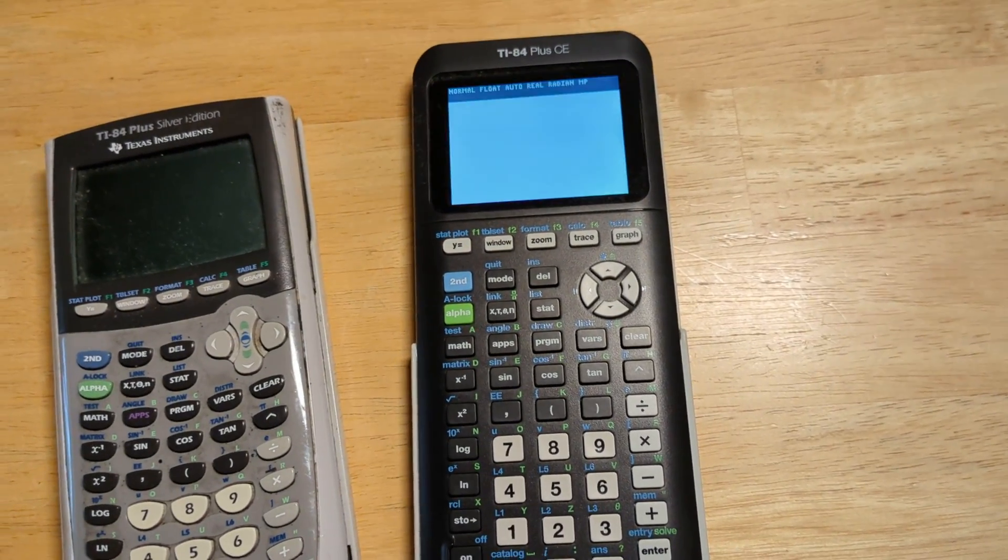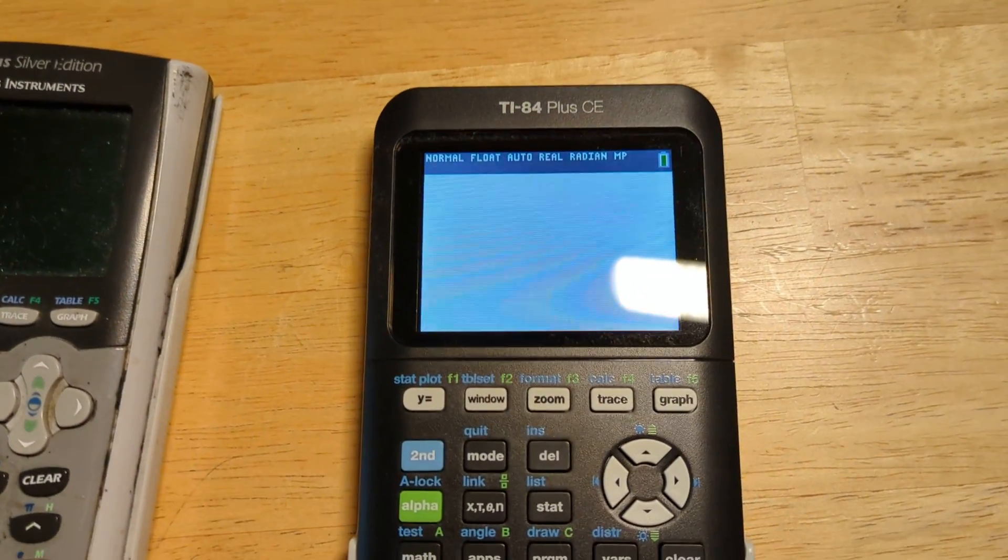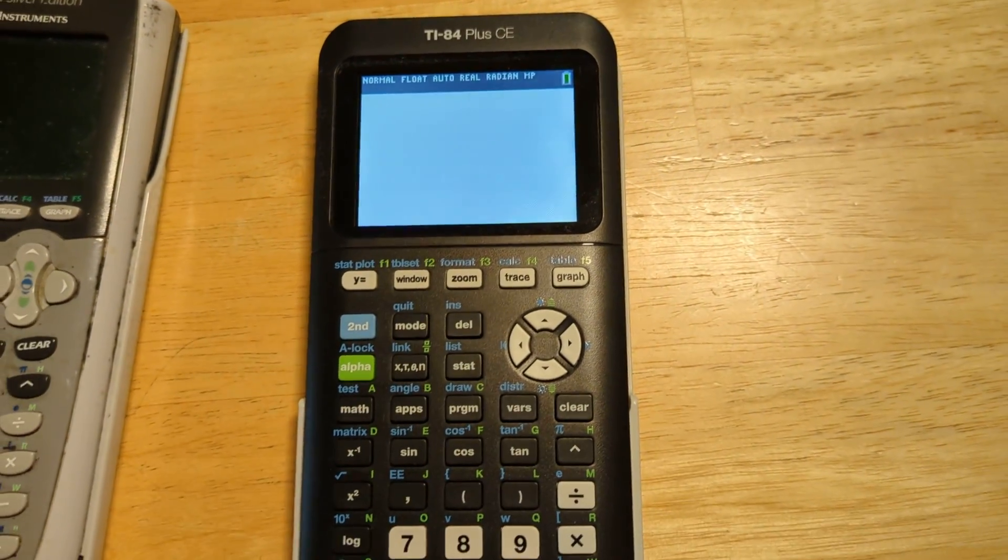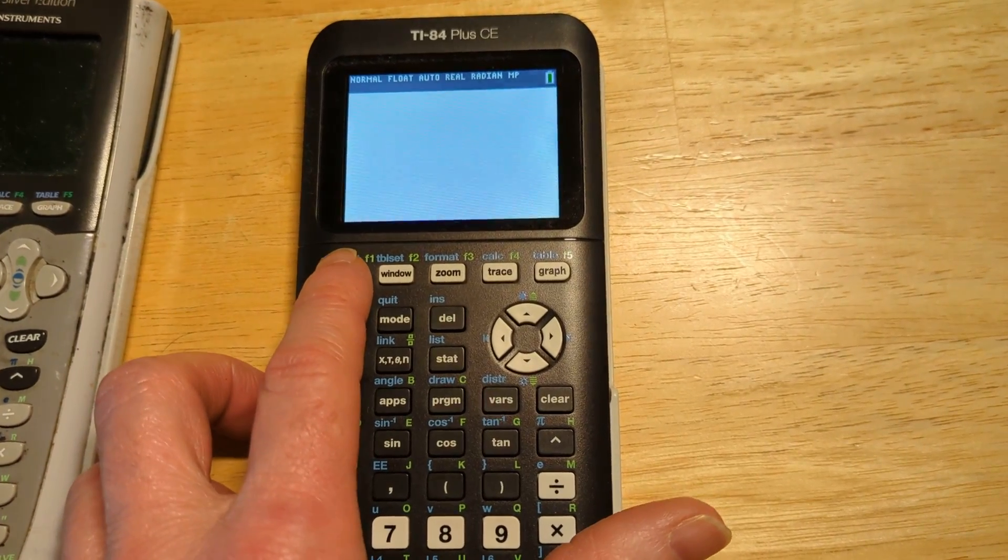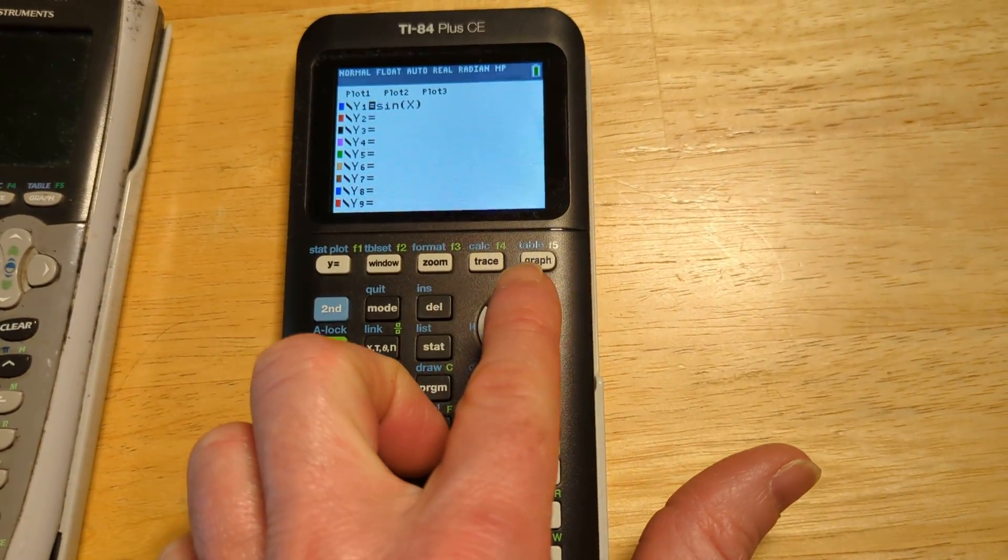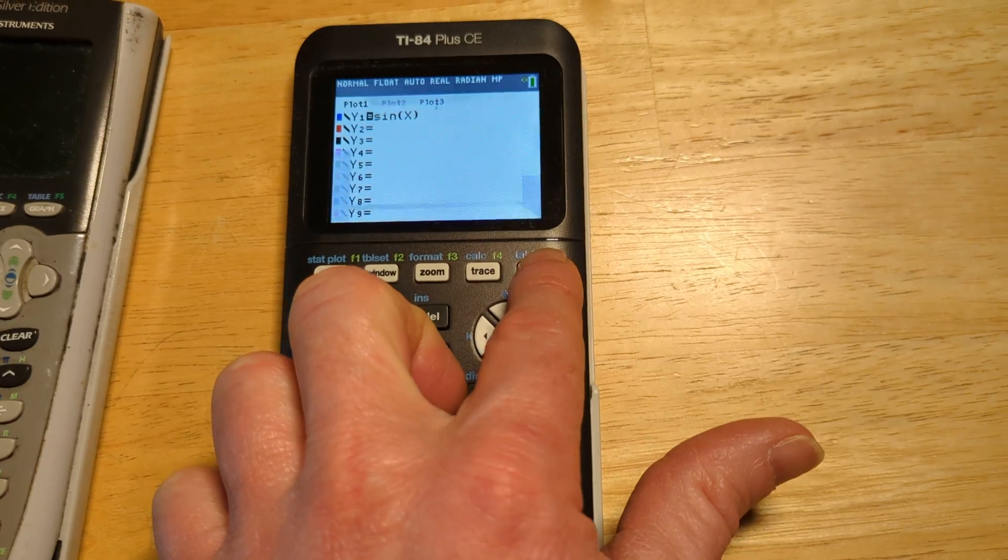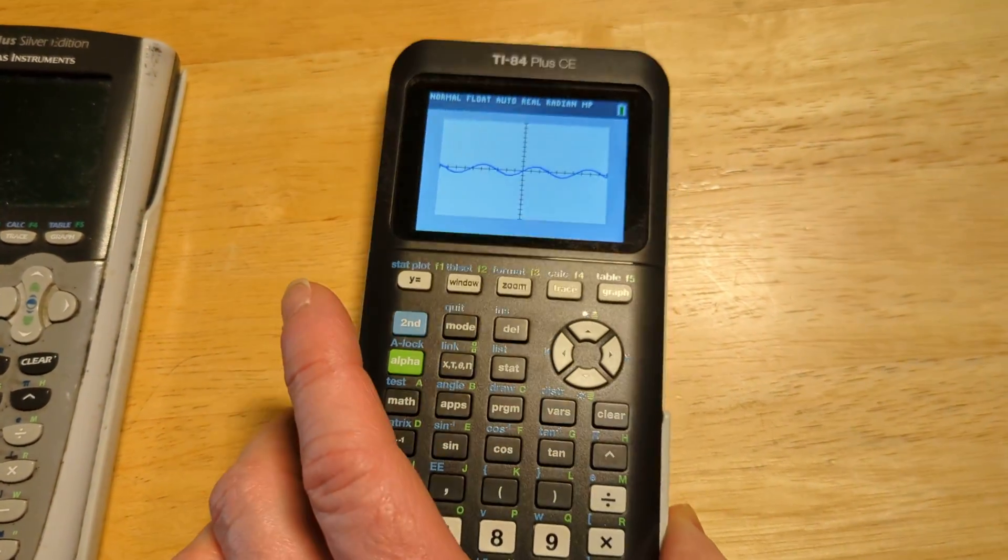So I'm going to turn this one on so you can see what it looks like. And let's graph something. So I'm going to click Y equals, and there I have the sine function typed in already. I'll hit graph, and there you can see the graph of sine.